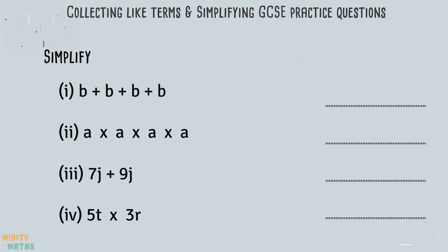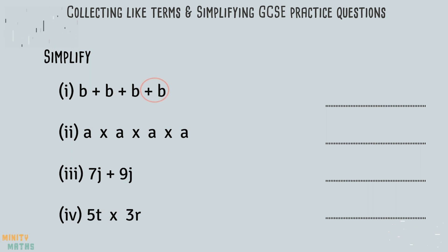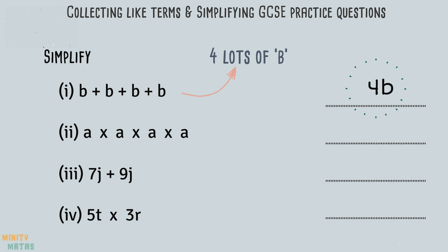We are given four sub-questions to answer — these sorts of questions are usually worth one mark each. Question one asks us to simplify the expression b + b + b + b. Here we have four lots of b, which can also be written as 4b. This is now in its simplest form.